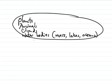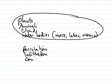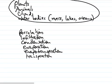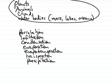In terms of processes, we are talking about percolation, which is the horizontal movement of water underground. Then we have infiltration, condensation, evaporation, and evapotranspiration. Those are some of the processes in the hydrological cycle.